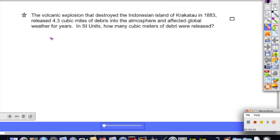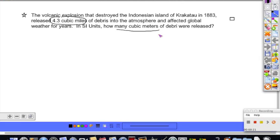The volcanic explosion that destroyed the Indonesian island in 1883 released 4.3 cubic miles of debris into the atmosphere and affected global weather. In SI units, how many cubic meters of debris were released?